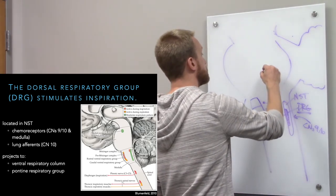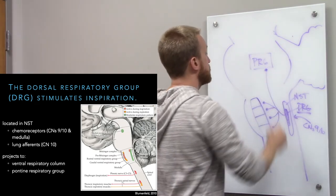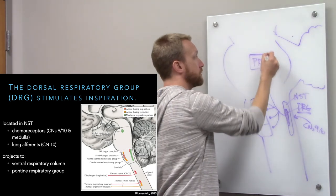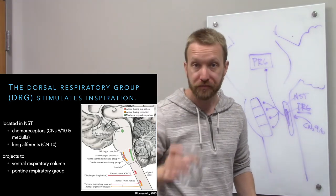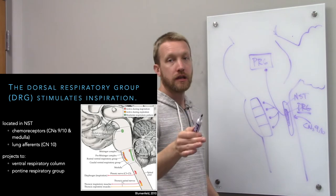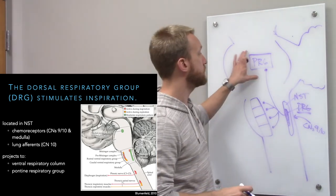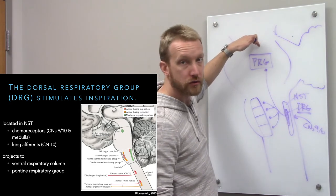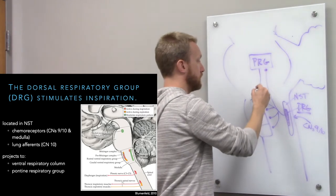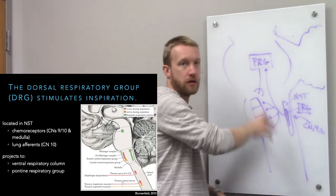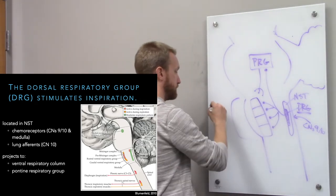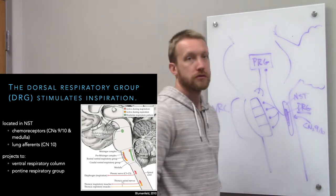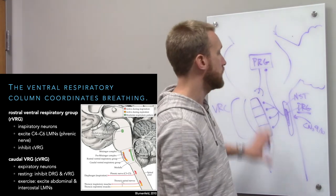The other target is the pontine respiratory group up in the pons. The pontine respiratory group is the manager — it makes sure we don't try to inhale while doing something incompatible with that, like taking a drink. It has input from the cortex so it knows what we want to do, and it provides widespread modulatory input to the ventral respiratory column.